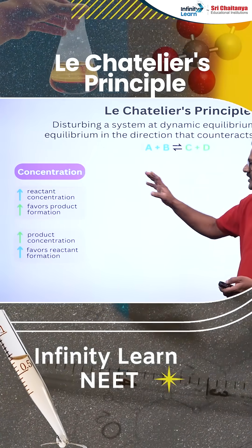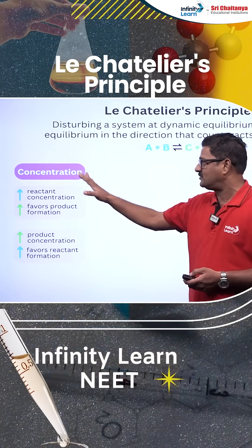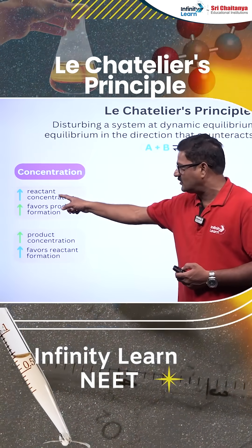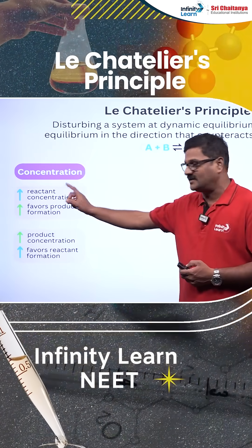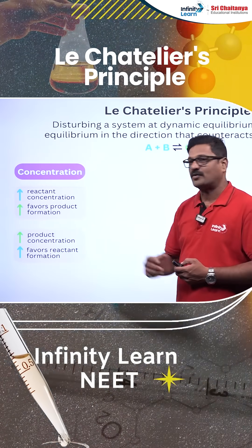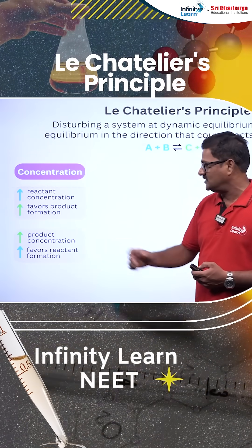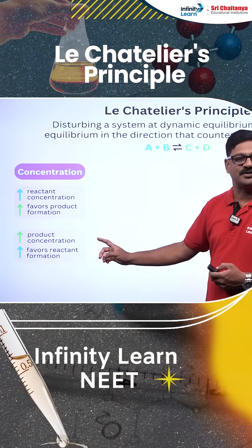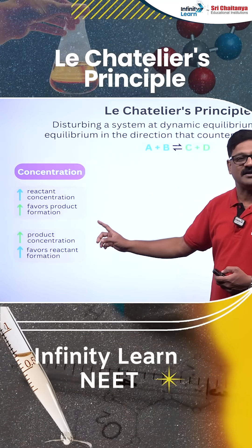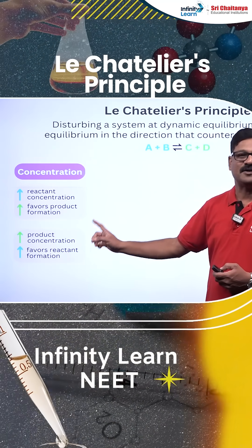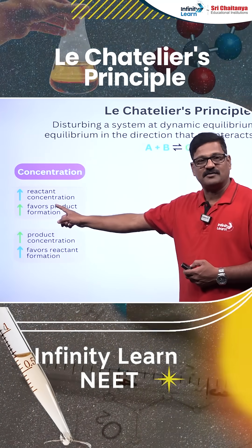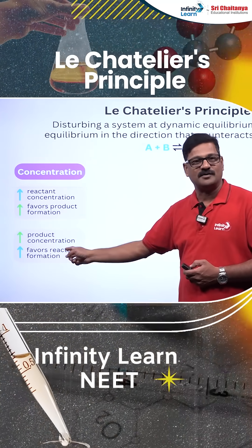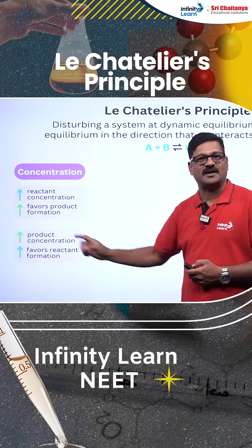If equilibrium is disturbed by a change in concentration — like if the reactant concentration is increased, it is going to favor the product formation. If the product concentration is increased, it is going to favor the reactant formation, meaning it is going to favor the backward reaction.